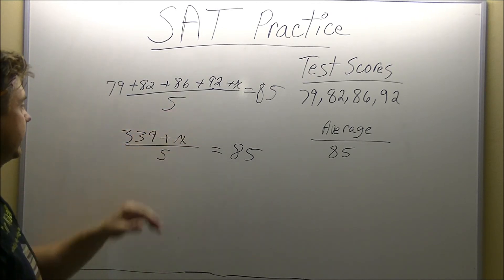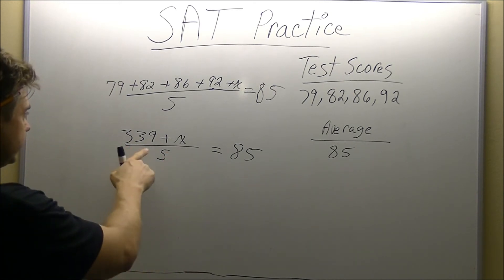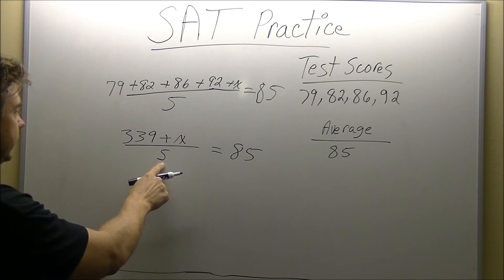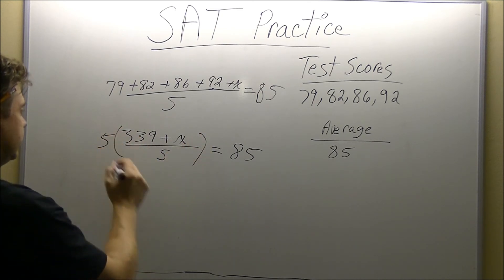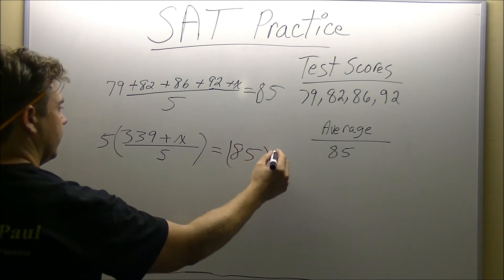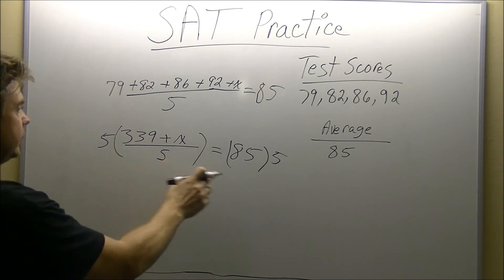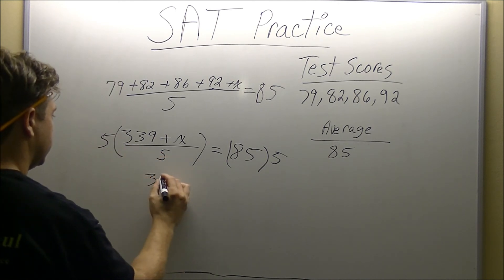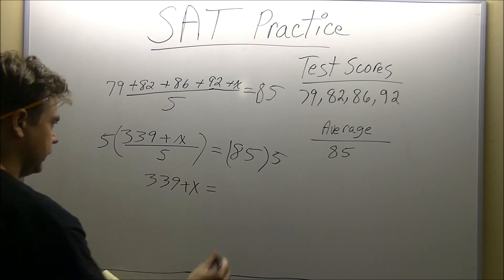So now that we've got all our addition taken care of, the next thing we're going to look at is how are we going to get X by itself. Well, upstairs is tied by addition, so there's nothing we can do with that. The only thing we can do is get rid of this five. This five is tied to this term right here by division. The opposite of division is going to be multiplication. Whatever we do to one side, we're going to do it to the other side. We're going to multiply the other side by five. Five over five is going to give us one. So we just leave 339 plus X is equal to 425.